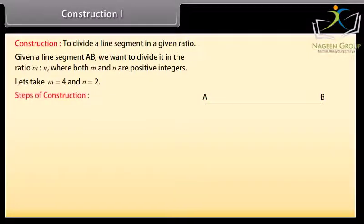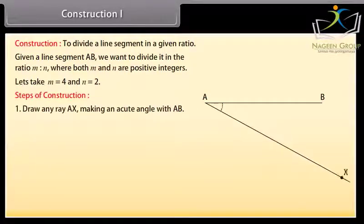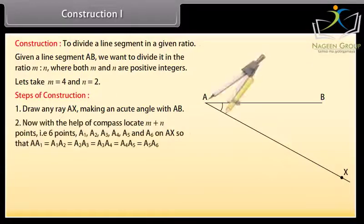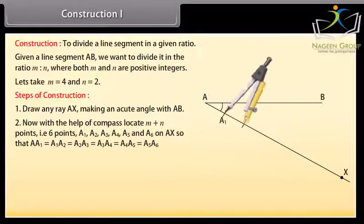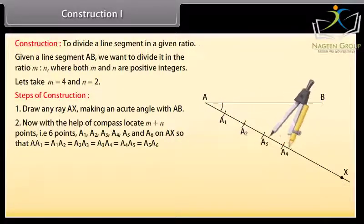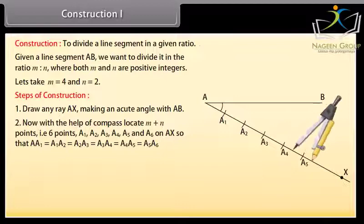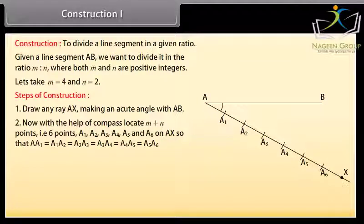Steps of Construction: Draw any ray AX making an acute angle with AB. Now with the help of a compass, locate M plus N points — that is 6 points — A1, A2, A3, A4, A5 and A6 on AX.